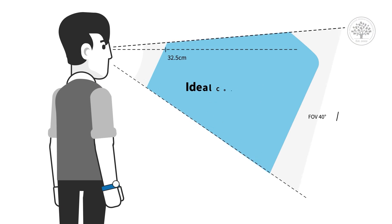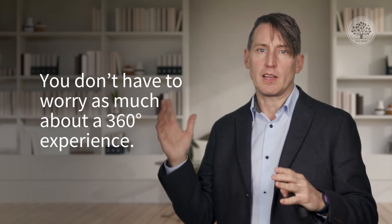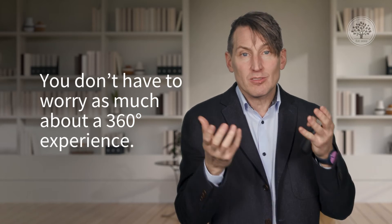What studies have shown is that our ideal content area is in that 40-degree range of field of view. It means you don't have to worry as much about a 360 experience unless you're deliberately trying to hide something or create excitement, mystery, or curiosity. Generally, when someone's interacting with an AR hologram or visualization, they're doing it in the range right in front of them — almost the way you'd talk to a colleague at a conference.